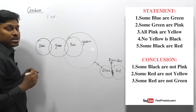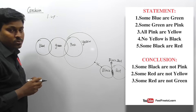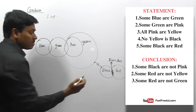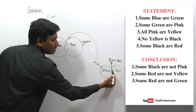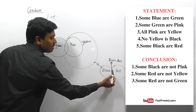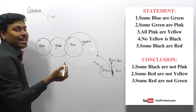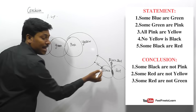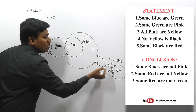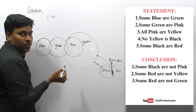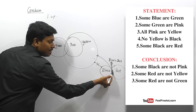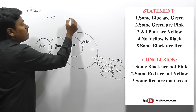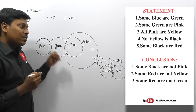Conclusion two: 'some red are not yellow.' Some red will be this region, which contains black. We already know there is no possible connection between black and yellow. So some red (this region) is not yellow is correct. Conclusion two is true.